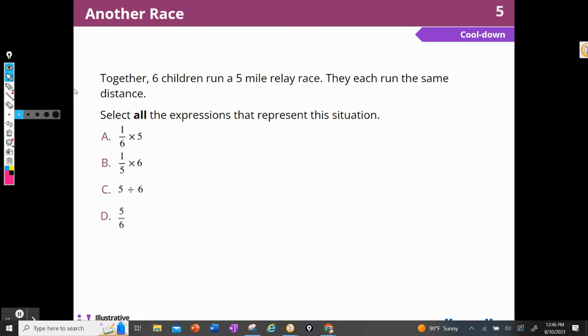Let's do our cool down and then we'll be done for the day. Together, six children run a five mile race. They each run the same amount of distance. So remember that we're running a five mile race and there are six children. So we're going to take that five miles and we're going to divide it into six pieces. And so our answer would be five over six. Or each child is going to run one sixth of five miles. So we could write that as well. So I could say one sixth of five and five divided by six and five sixths.